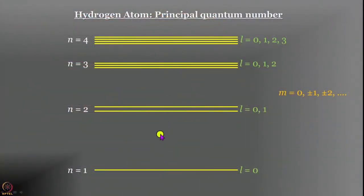We are discussing the hydrogen atom. We have talked about a couple of quantum numbers, and now we are going to discuss the quantum number that we are perhaps most familiar with — the principal quantum number. Remember that one of the beginnings of quantum mechanics is the transitions from one energy level to another in the hydrogen atom, which showed up as line spectra, and different experiments revealed different features of the spectrum. That is what led to the idea of quantum mechanics.